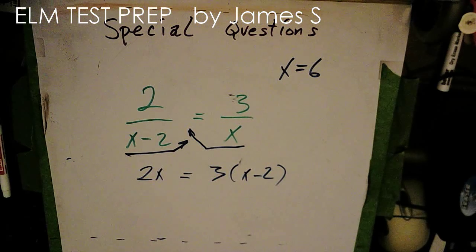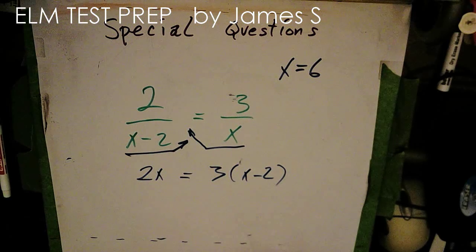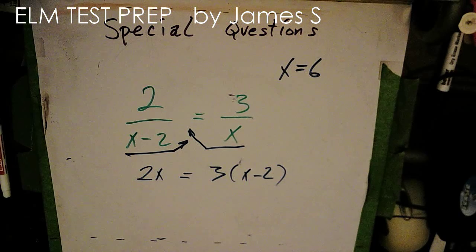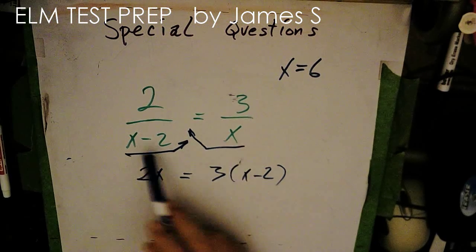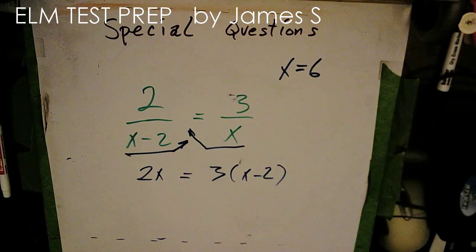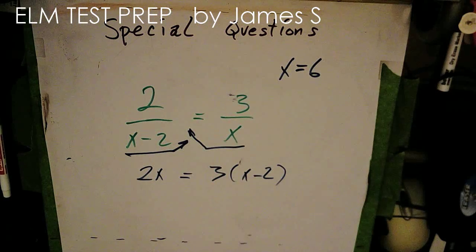So then I get 2x equals 3 times x minus 2. And already you can see I'm back there. Notice how quickly this occurred. I didn't have to flip. I didn't have to do a lot of multiplying. Essentially, I did multiply. I multiplied both sides by opposite. But it dropped out.